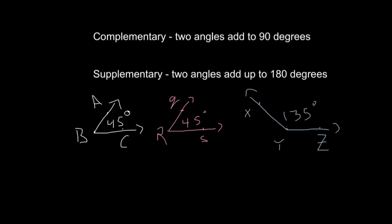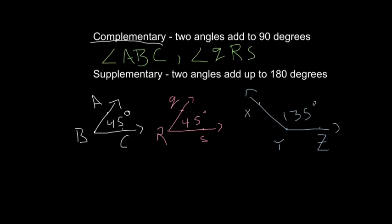When we talk about angle measurement, there's a few terms we need to know. One is complementary, which basically means two angles that add up to 90 degrees. So if we look down here, we have angle ABC with a measurement of 45. We also have angle QRS with a measurement of 45. If we add 45 and 45 together, we're going to get 90. So if we wanted to talk about two complementary angles, angle ABC added to angle QRS is going to equal 90. So those are two complementary angles.